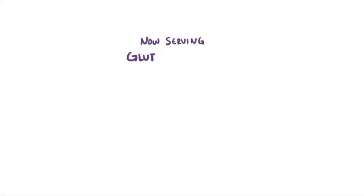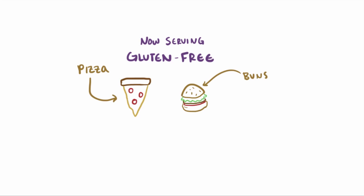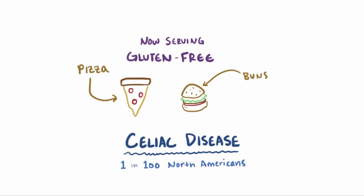It's becoming more and more common to see things like gluten-free pizza or gluten-free buns at restaurants, grocery stores, and other food-based businesses, and this is partly because there's this increasing recognition, awareness, and diagnosis of a disease called celiac disease, sometimes called celiac sprue. As many as 1 in 100 North Americans are diagnosed with this.